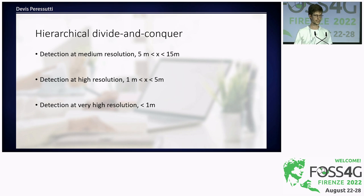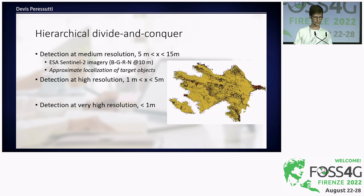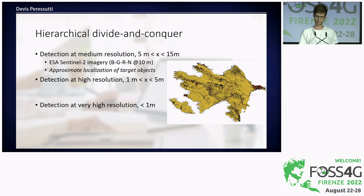First, we start with detection at medium resolution — Sentinel-2, or maybe even Landsat. In our use case, we use ESA Sentinel-2 imagery with the 10-meter bands: blue, green, red, and near-infrared. The idea is to use this imagery for approximate localization of built-up areas. Knowing where built-up areas are means we avoid ordering expensive high-resolution imagery over empty areas, which can save a lot of money.